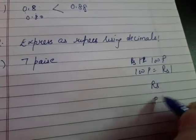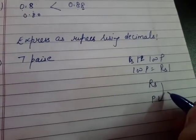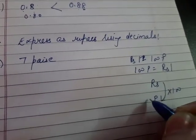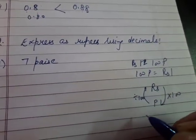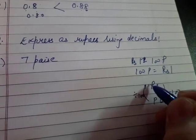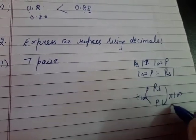Toh jab humne rupees se payaso me jana hota hai, toh hum kya karte hai? Multiply by hundred. Or jab hum payaso se rupees me jate hai, so we divide by hundred. Clear? Means chote se bade me jana hai toh hum divide karte hai. Bade se chote me jana toh multiply.